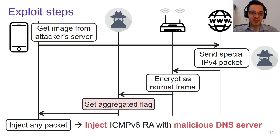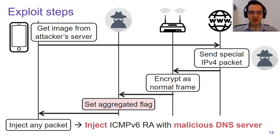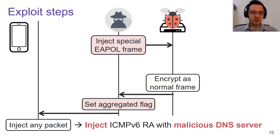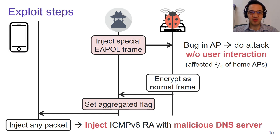This attack is not trivial because we need to be within physical range of the victim and trick the victim into connecting to our server. However, by relying on an implementation flaw in access points, we can perform the attack without user interaction. This flaw was present in two out of four home access points, indicating that this vulnerability is fairly common in practice.